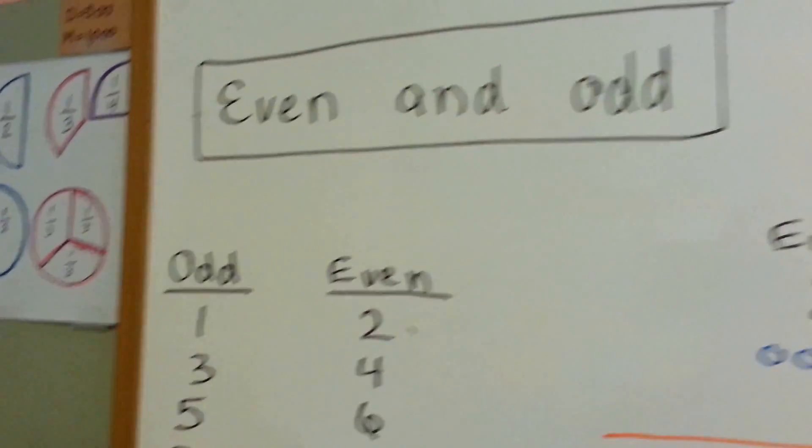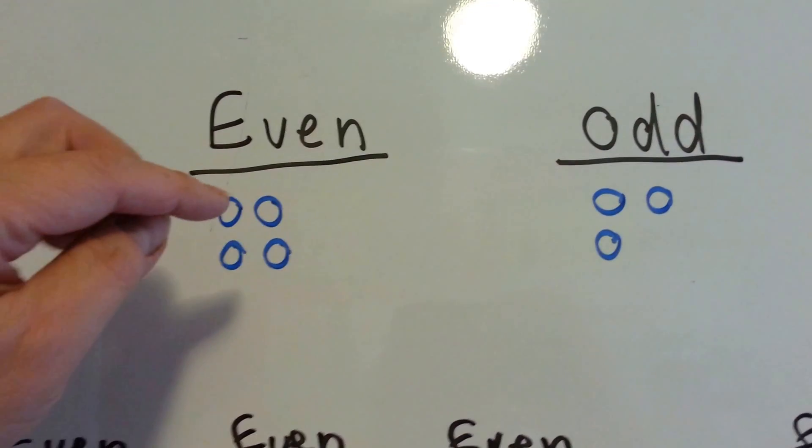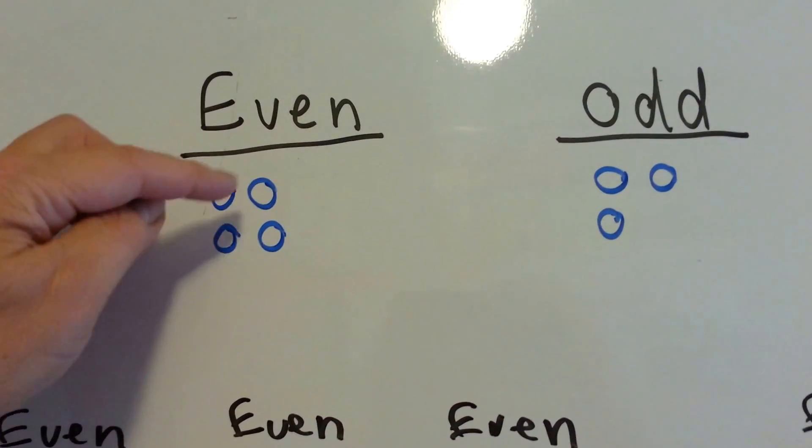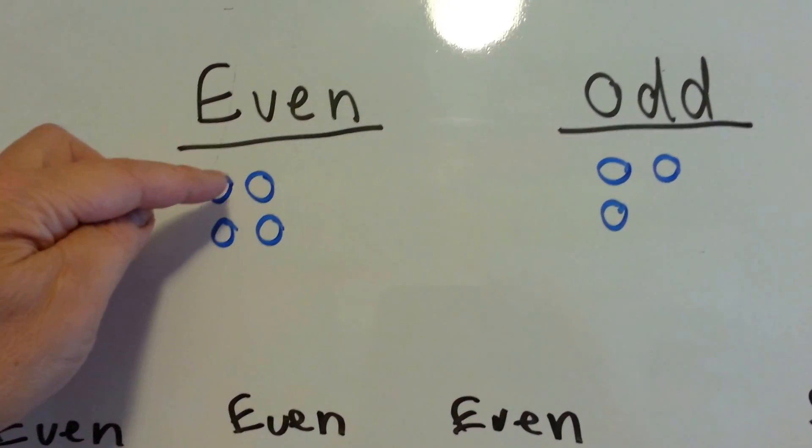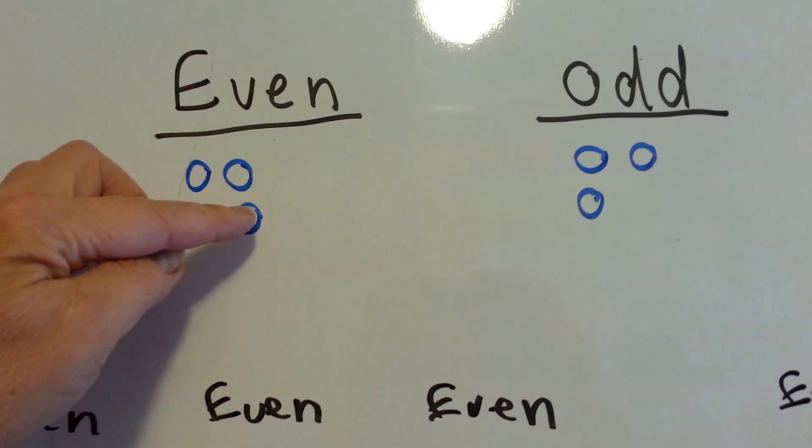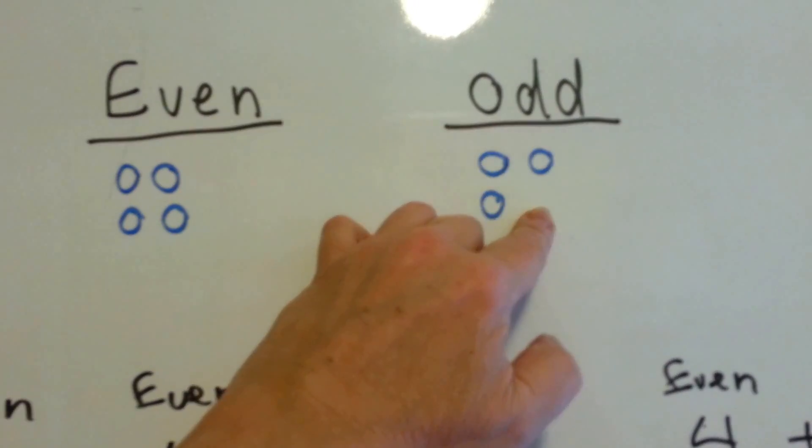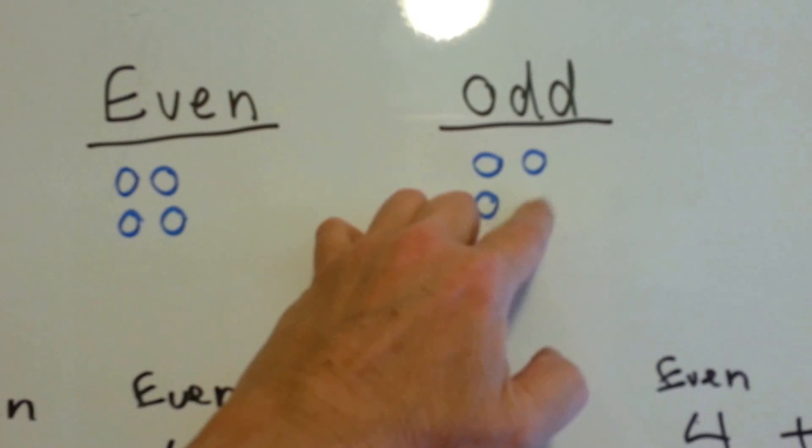Now the way you can tell if a number is even or odd is an even amount of numbers. You will see them line up like this. They'll each have pairs. This one's got this one as a friend and this one's got this one as a friend. Odd numbers, somebody doesn't have a friend. See that? They're friends but this one doesn't have one.